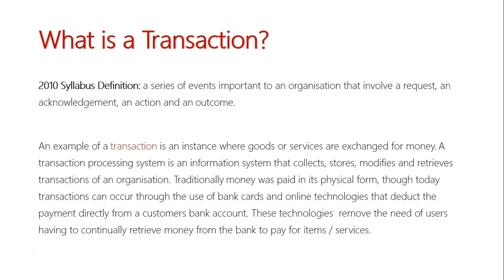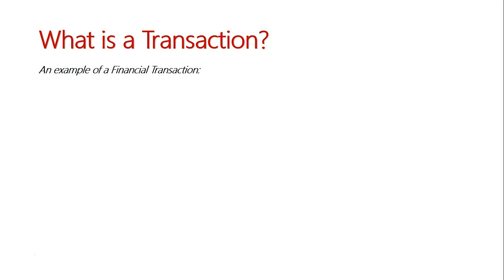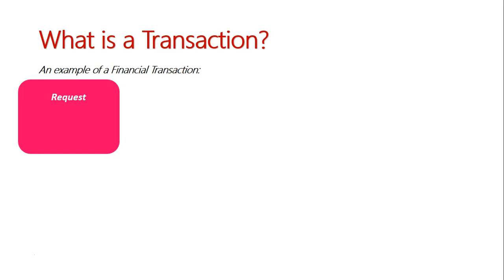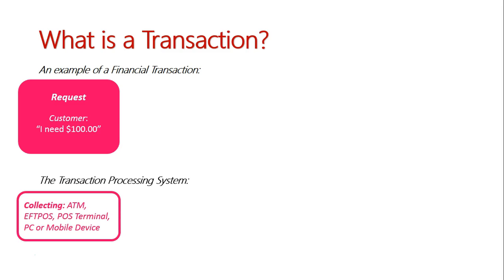Let's try to line up a TPS specifically with what the syllabus definition is saying. Firstly, we have our request. In this request, we're going to have a customer requesting $100 — "I need $100." They will do this via a collecting device, such as an ATM, EFTPOS, point-of-sales terminal, or if they're using Internet Banking, it may be through their PC or mobile device.